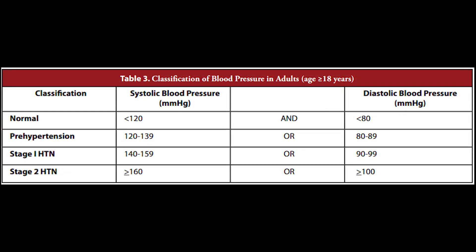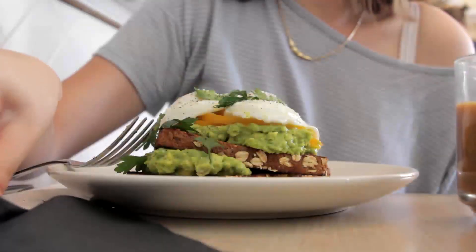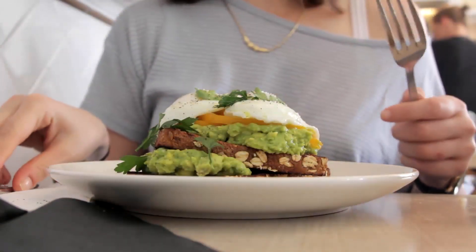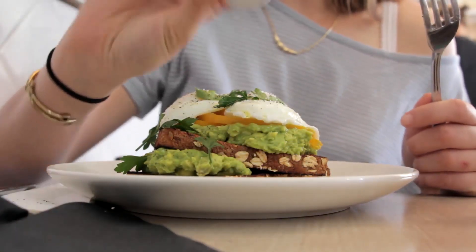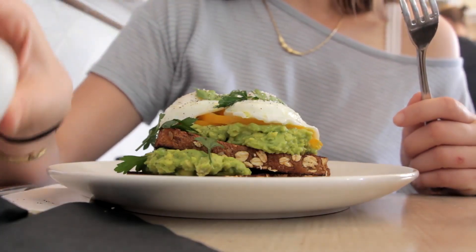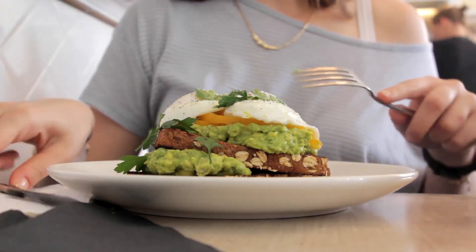Hypertension is defined as either a systolic or diastolic blood pressure measurement consistently higher than an accepted normal value — above 129 mmHg systolic or 89 mmHg diastolic. It is a gradual disease.